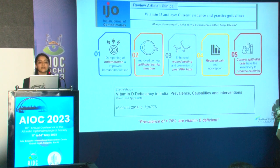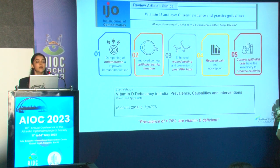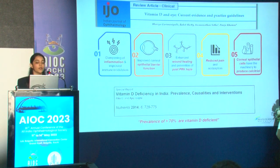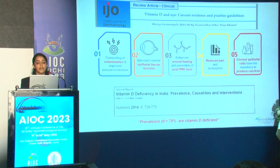In this current publication, we have summarized the role of vitamin D in the eye. It helps in dampening inflammation and improving immunomodulation, improves the corneal epithelial barrier function, enhances wound healing, and reduces pain and nociception.